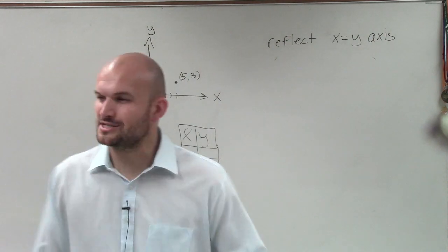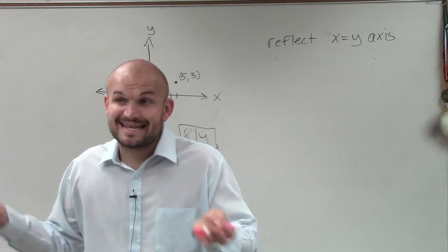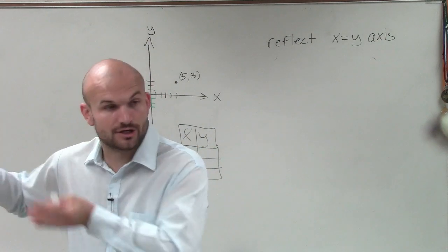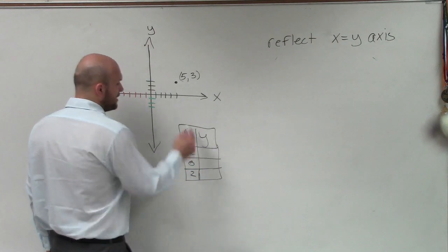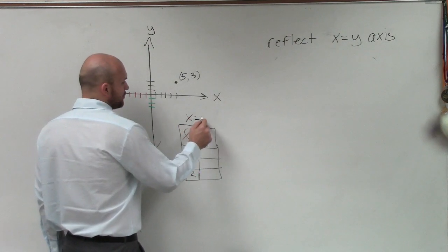Maybe even in pre-algebra, you guys learned how to write a table that created a line or a graph. So if I was going to choose points, let's say negative 2, 0, and 2, and my equation is x equals y...